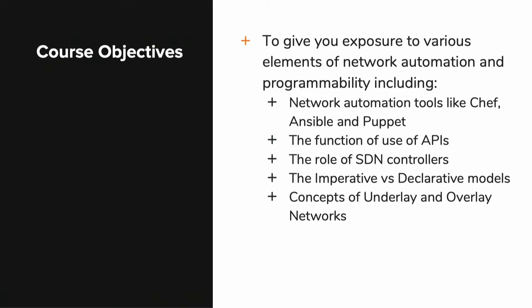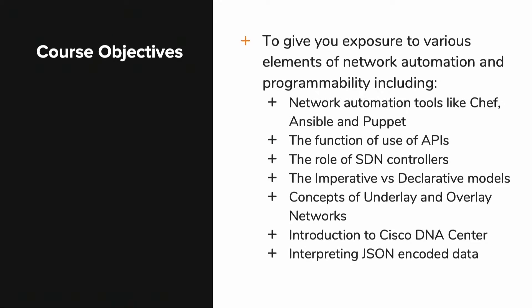I'll introduce you to the concepts of underlay and overlay networks and what those are. You'll also be introduced to Cisco's DNA Center platform so you can understand what that product is, what challenges it was designed to solve, and how it could potentially help you in your network. We'll also look at how to interpret JSON encoded data — it's an integral component to how data is formatted in the world of programming and automation of networks, and you need to know what JSON data is and how to recognize it and read through it when you see it.